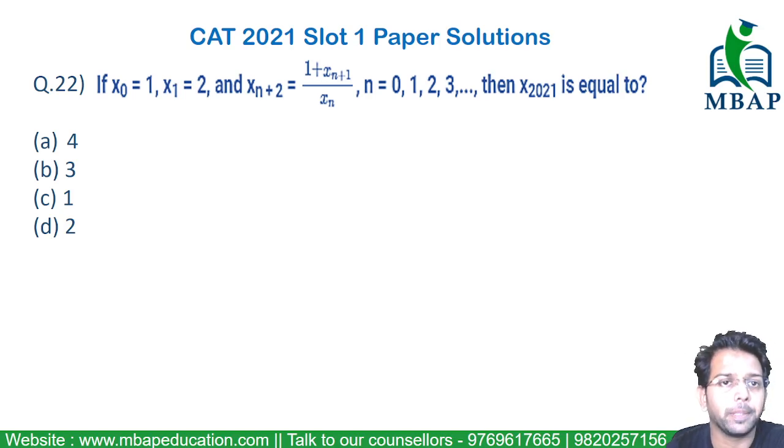Let's start the last question which came in this paper, CAT 2021 slot 1. It's a series and sequence based question. x₀ has been given to you as 1, x₁ has been given to you as 2. The next value x₂, you have a logic: xₙ₊₂ will be equal to 1 plus xₙ₊₁ divided by xₙ. And for all the consecutive values, you have to find the value of x₂₀₂₁.